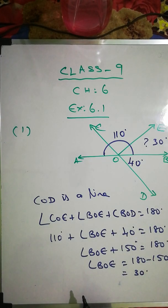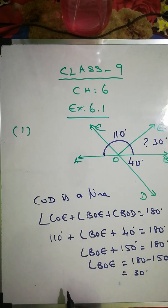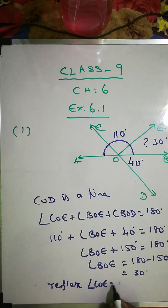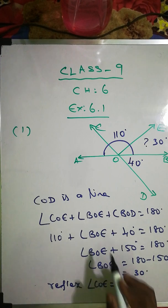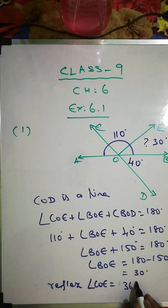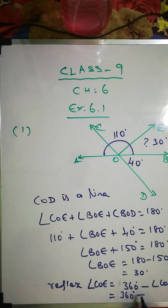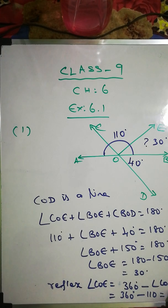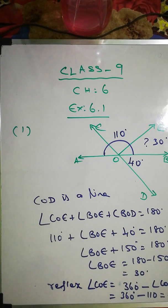Now we find the reflex of angle COE. Reflex of angle COE means the total is 360 degrees. So reflex of angle COE equals 360 minus angle COE. We got COE as 110, so 360 minus 110 equals 250 degrees. That is the answer.